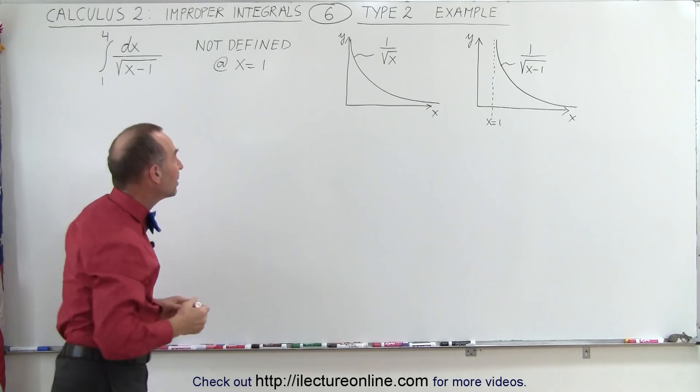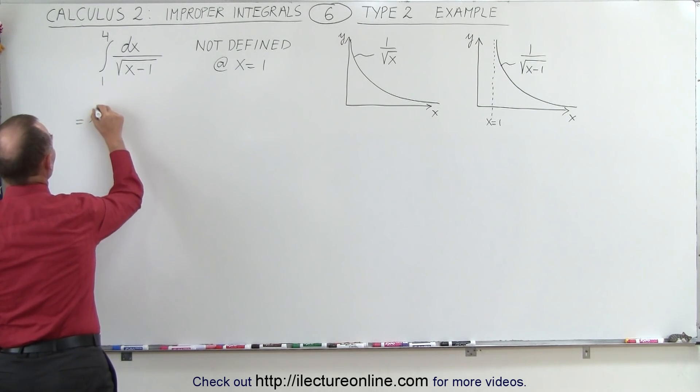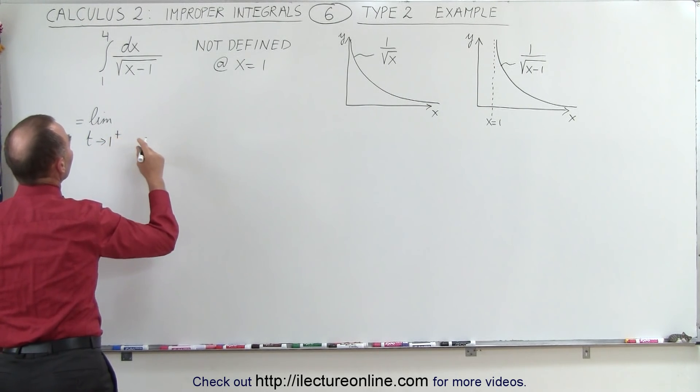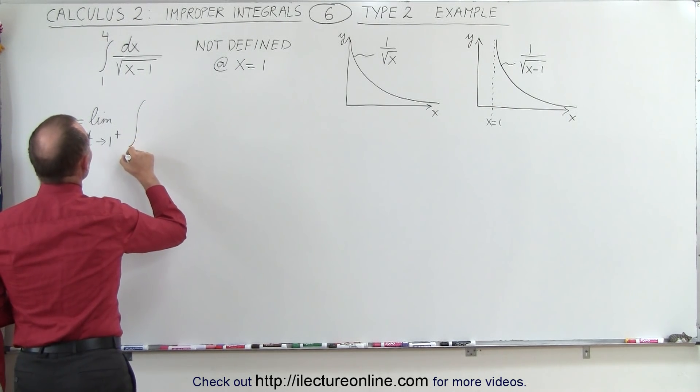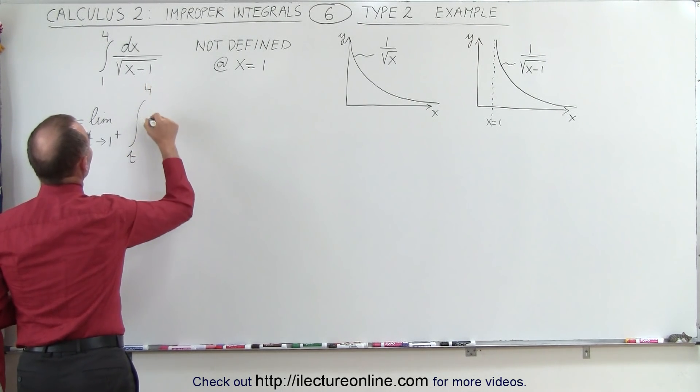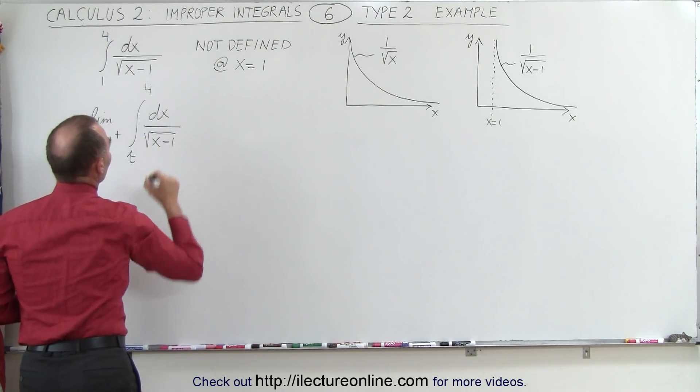So the best way to deal with it is to rewrite it as such. You can say that this is equal to the limit as t approaches 1 from above, because it's between 1 and 4. And we then can take the integral from t to 4 of dx over the square root of x minus 1.